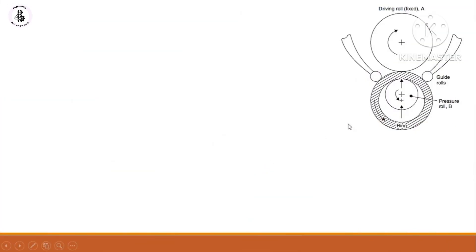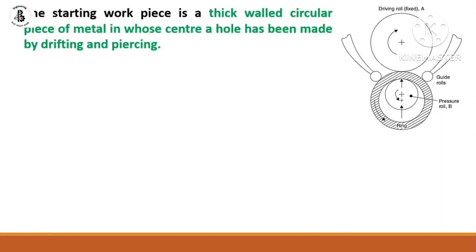After this, you can see the figure that might be having difficulties to understand, but after viewing that video you can easily understand how it works. The starting workpiece is a thick-walled circular piece of metal in whose center a hole has been made by drifting and piercing.